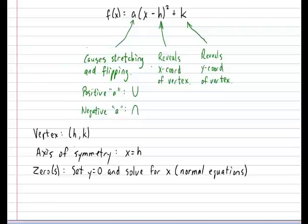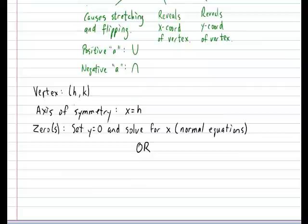Now there's also another way to calculate zeros from the standard form. So put a big OR and the alternative is to use formulas. The formula that will help us is the following: the zeros could also be calculated by doing h plus and minus the square root of negative k divided by a.